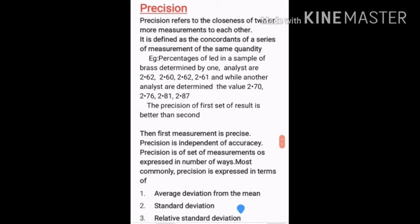We will do repeated measurements. In titration, we look for concordant values — values that are close to each other. When one measurement gives values close to each other, those are considered precise values.